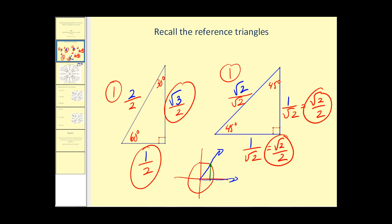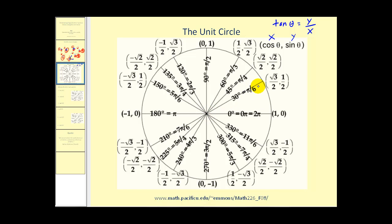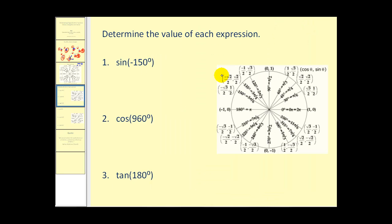Let's take a look at the unit circle. We can see the labels of the most common angles in standard position. Keep in mind that the radius r is equal to one, which tells us the x-coordinate is equal to cosine theta, the y-coordinate is equal to sine theta, and of course tangent theta equals y over x. Let's use this to find some trig function values by figuring out where the terminal side of the angle in standard position intersects the unit circle.